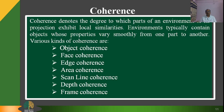Frame coherence means that pictures of the same environment at two successive points in time are likely to be quite similar, despite small changes in objects and viewpoint. Calculations made for one picture can be reused for the next in a sequence. These are the various coherences which are used while developing graphics applications and they play a very key role in the development of such applications.